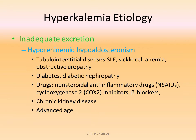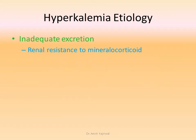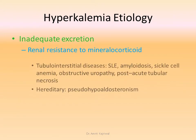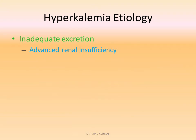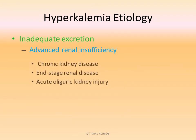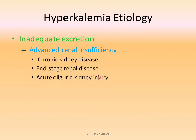Since many drugs are causing hyperkalemia, if a patient has got hyperkalemia we must look out for the history of drugs. Renal resistance to mineralocorticoids may be seen in tubular interstitial diseases, SLE, amyloidosis, sickle cell, obstructive nephropathy, post-acute tubular necrosis, and hereditary causes. Advanced renal insufficiency can also cause inadequate excretion, as seen in chronic kidney disease, end-stage renal disease, and acute oliguric kidney disease.